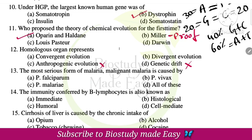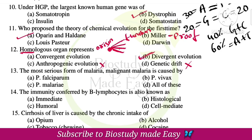Homologous organs represent divergent evolution — same origin and anatomical structure with different functions. Don't confuse convergent evolution with divergent evolution. Homologous means same origin, same structure. Analogous organs represent convergent evolution — different origin, same function. So the right option is option A — divergent evolution for homologous organs. Plasmodium falciparum causes malignant malaria.